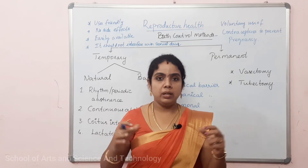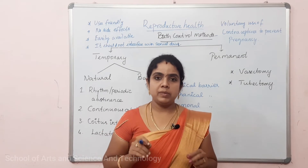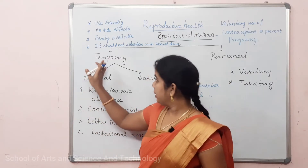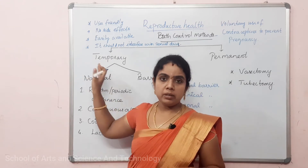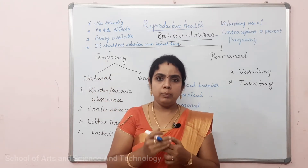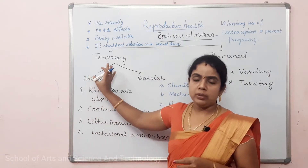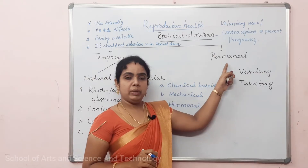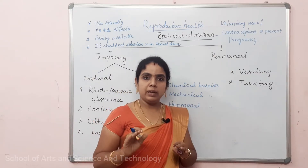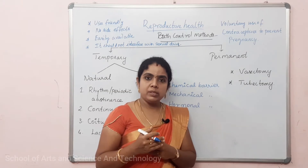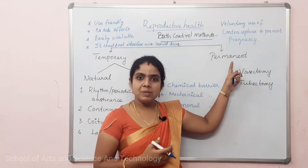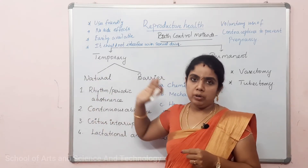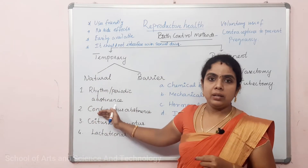There are two methods. The first is the temporary birth control method — it is only for a particular period. If a couple does not want a child now, they can go for temporary birth control methods. The second is the permanent birth control method — if they don't want any more babies, they can go for permanent birth control methods. So the two types are temporary and permanent.